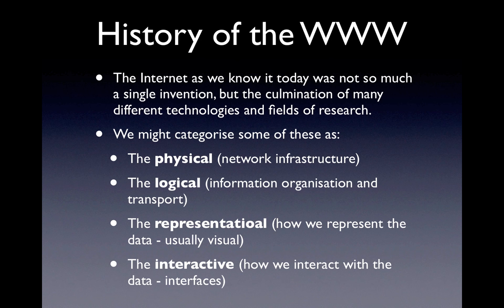We could categorise and break down some of the things that make up the internet into categories such as the physical — the network infrastructure that carries all the information, so that's your cables, cell phone towers, your ISPs, all of that sort of stuff.